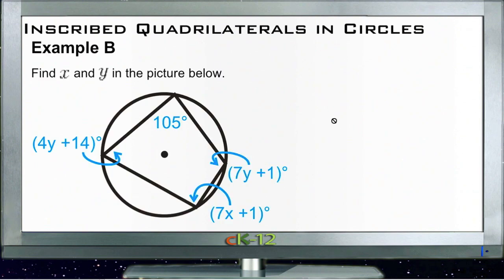Take a look at example B. Example B asks us to find x and y. So here we have 105 degrees, and its opposite is 7x plus 1. So let's start with that.